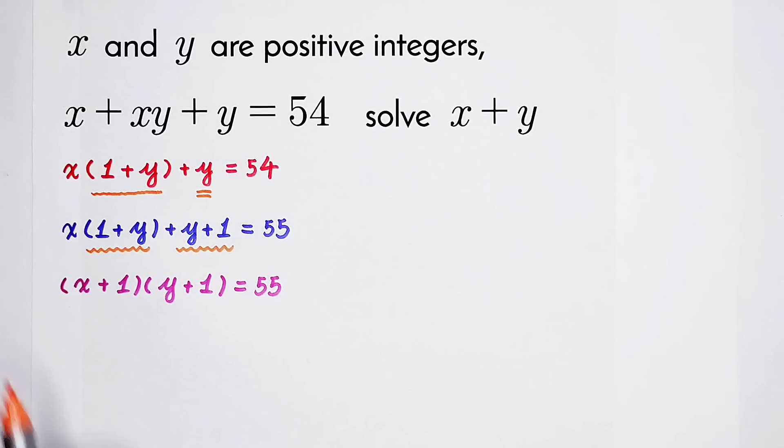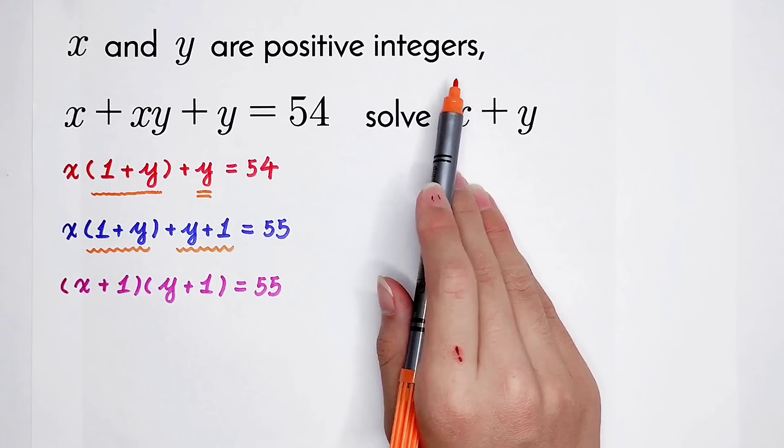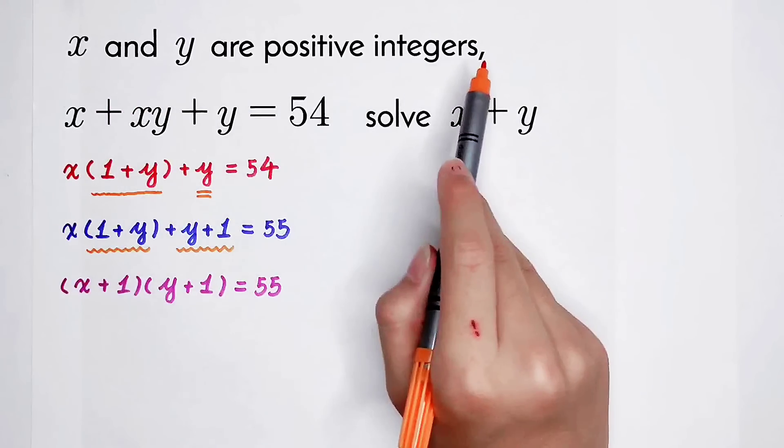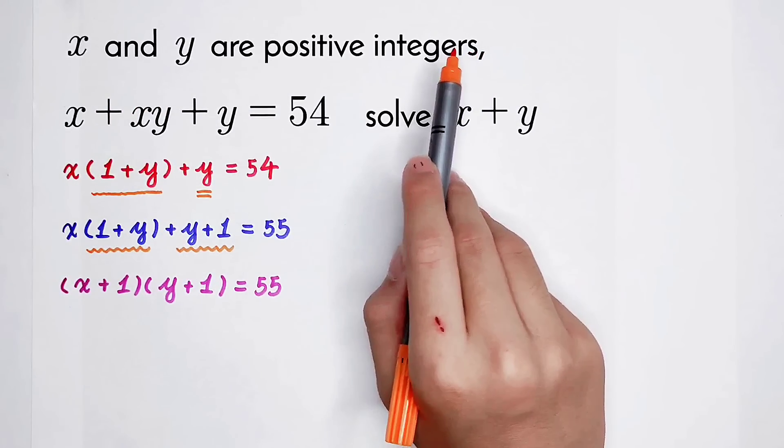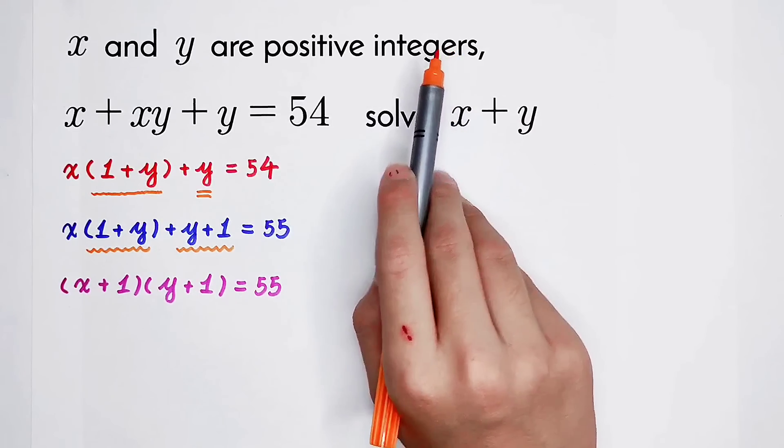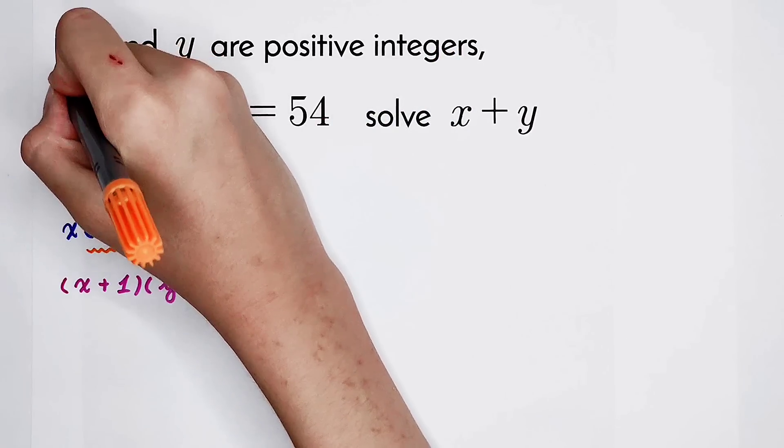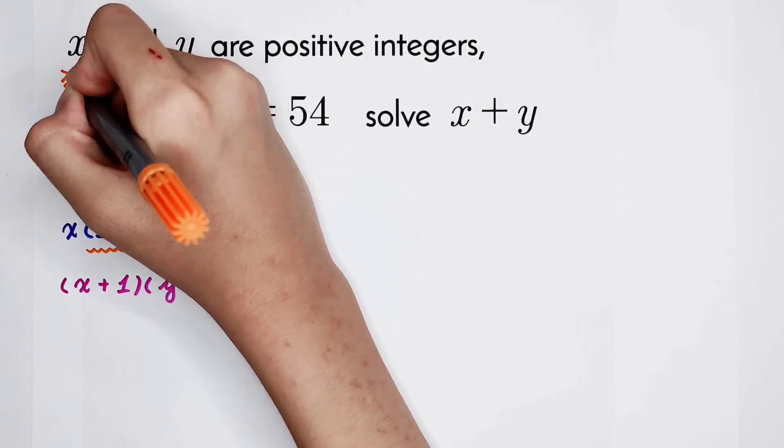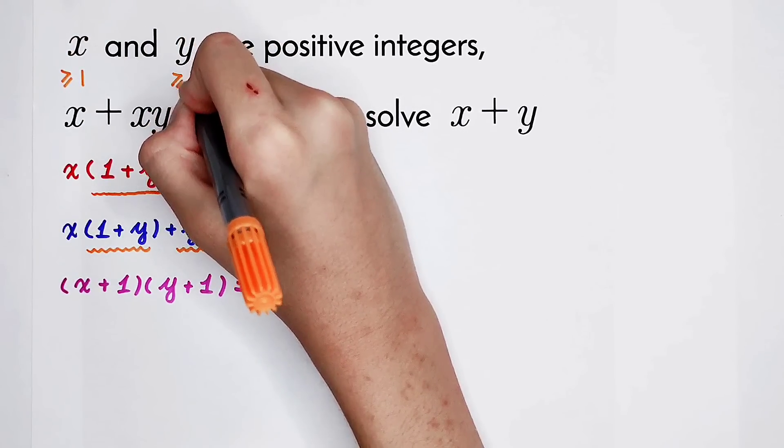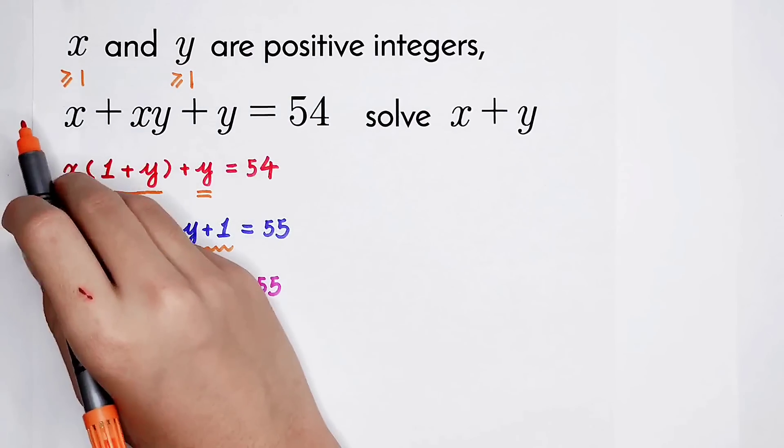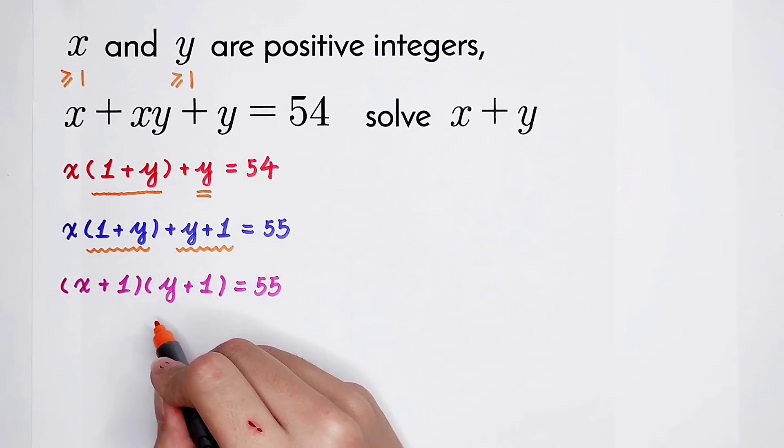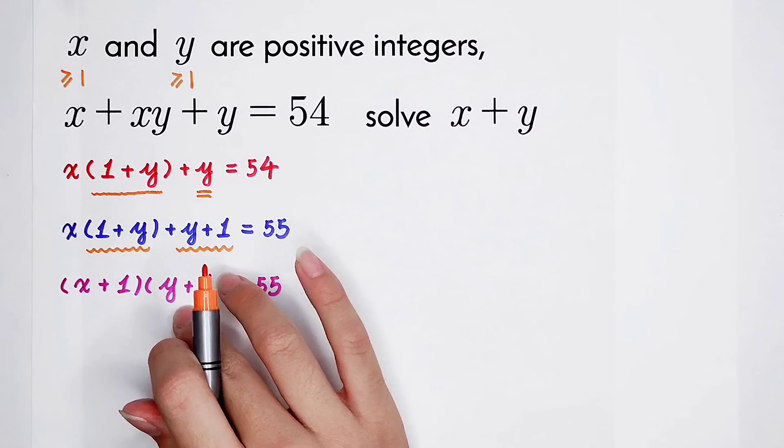We have to have a look at this problem again. It says x and y are positive integers. So because x and y are both positive integers, then I can get x and y are both greater than or equal to 1. So x plus 1 and y plus 1 are also positive integers. Aren't they?